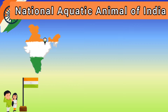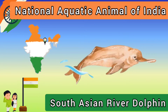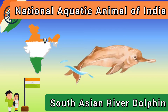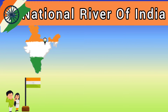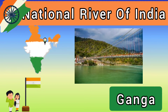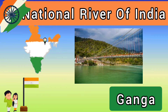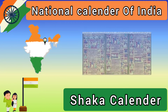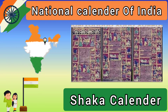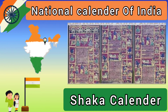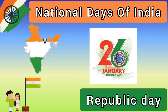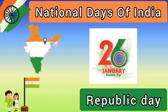National aquatic animal of India — South Asian River Dolphin. National river of India — Ganga. National calendar of India. National days of India: 26th January — Republic Day.